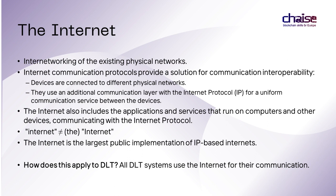The variety of existing physical networks imposes the problem of their internetworking. We cannot, for example, directly attach a mobile phone to a desktop computer because the former uses a wireless mobile connection and the latter a wired Ethernet. Internet communication protocols provide a solution for communication interoperability. On the internet, devices are connected to different physical networks, but they use an additional communication layer with the Internet Protocol (IP). This IP layer can be seen as an overlay over the underlying physical networks and provides a uniform communication service between the devices. The internet also includes the applications and services running on computers and other devices communicating over it. The Internet Protocol provides them with the exchange of data units called datagrams, which carry the content of our internet applications.